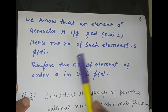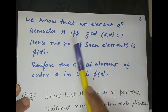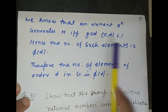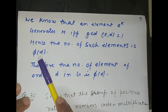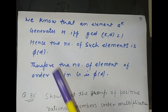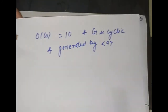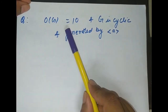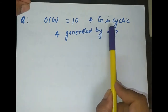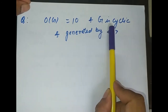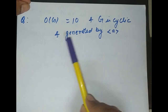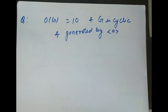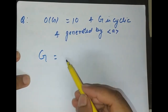So this is what we needed to prove: given a group of order n and a positive divisor d, the number of elements of order d is φ(d). Now let's see how this theorem describes the structure of a group. Suppose we have a cyclic group G of order 10, generated by element a.